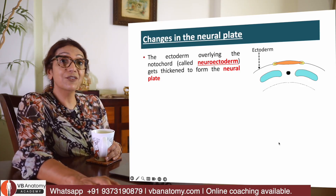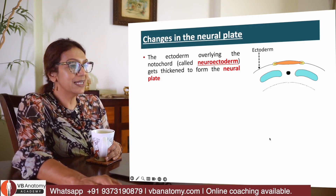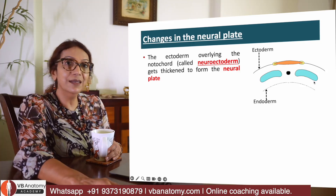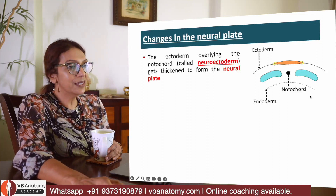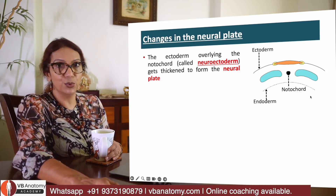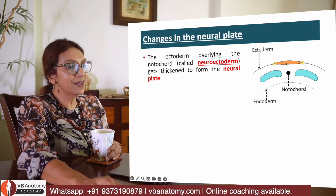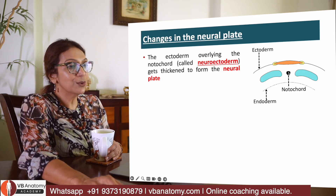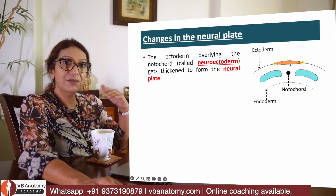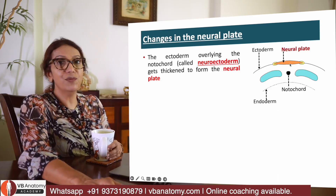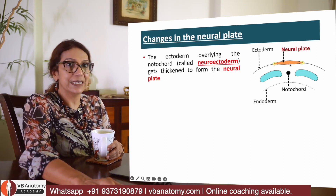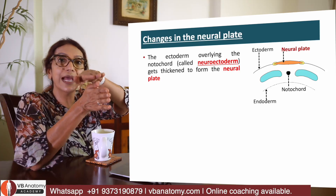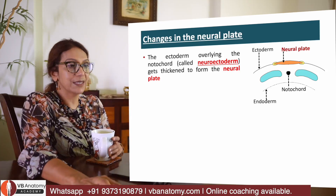What I am seeing on the screen now is a trilaminar embryo. That is the ectoderm, that is the endoderm, and this in between is the mesoderm. In the center of the mesoderm is the notochord. The cells lying above the notochord thicken to form the neural plate. So I have got a neural plate and a notochord lying below it.